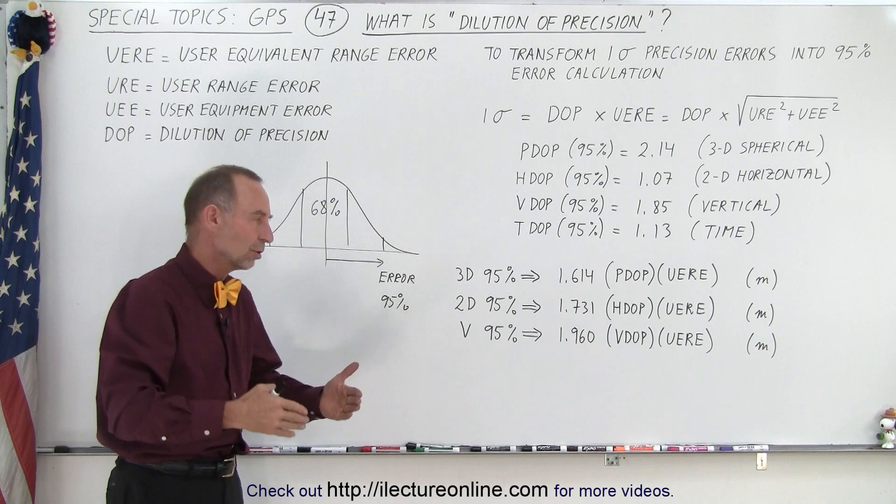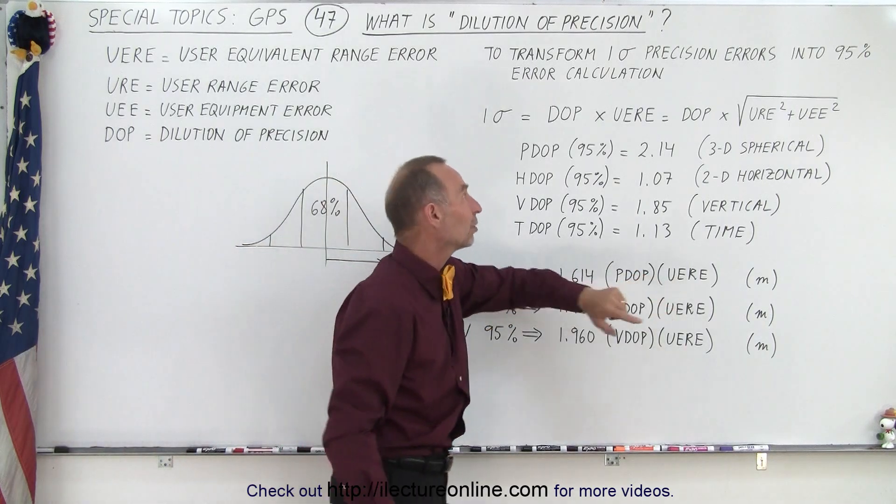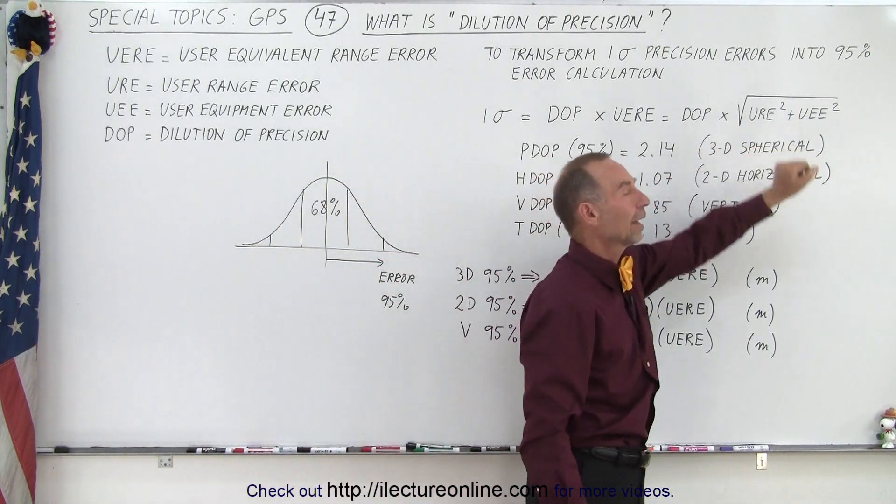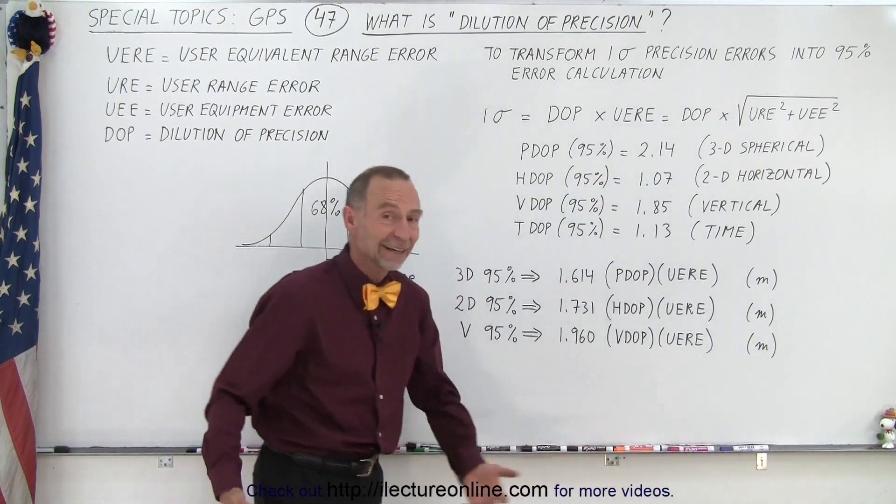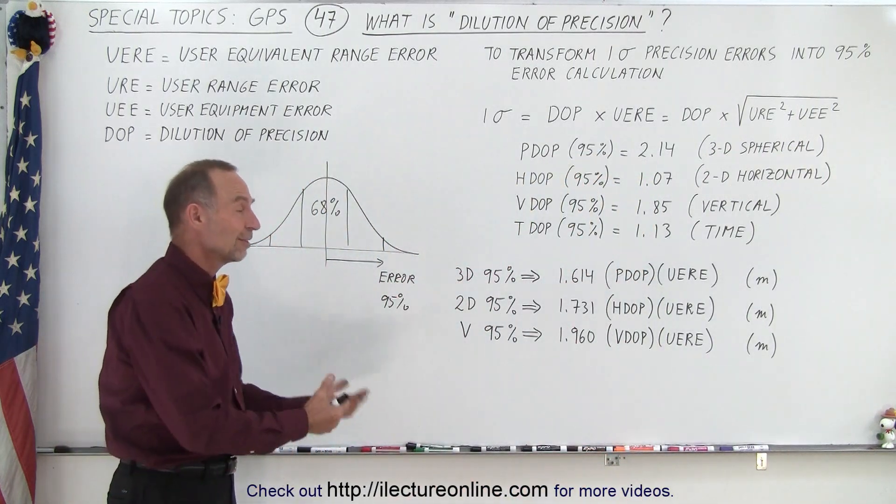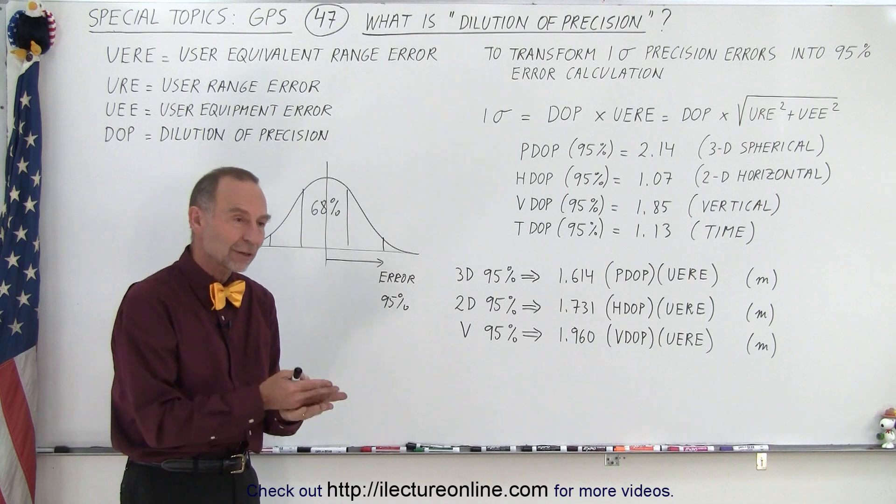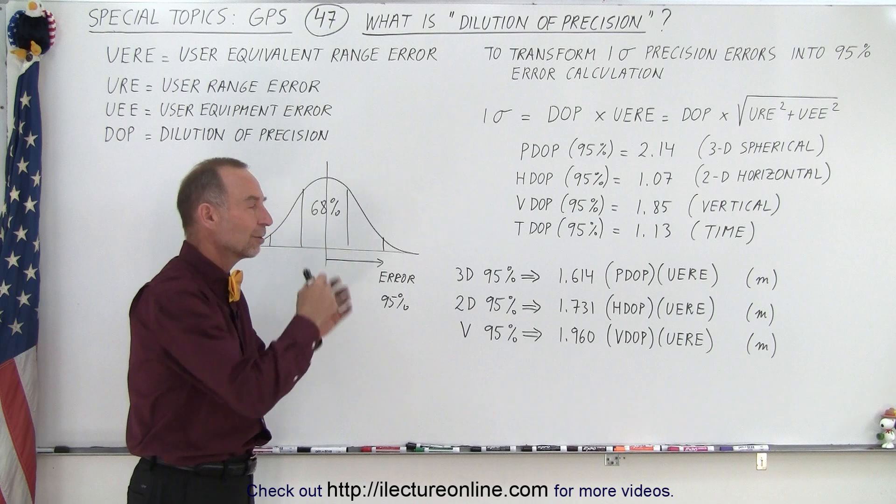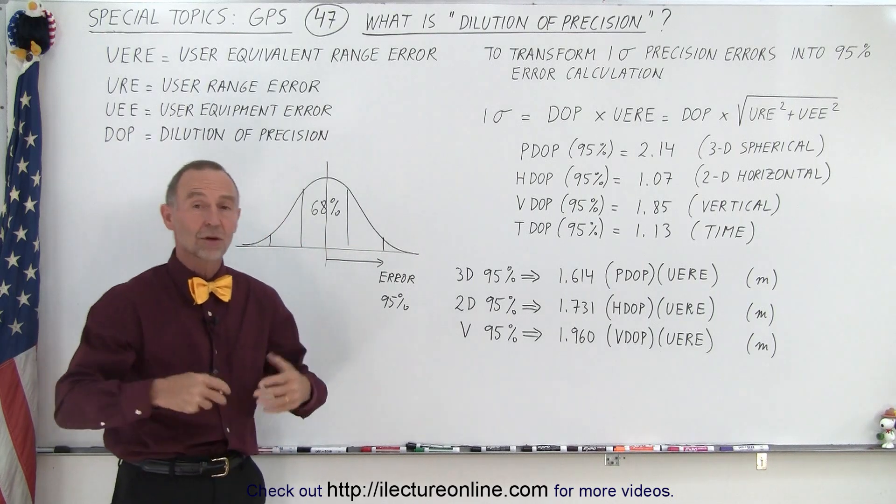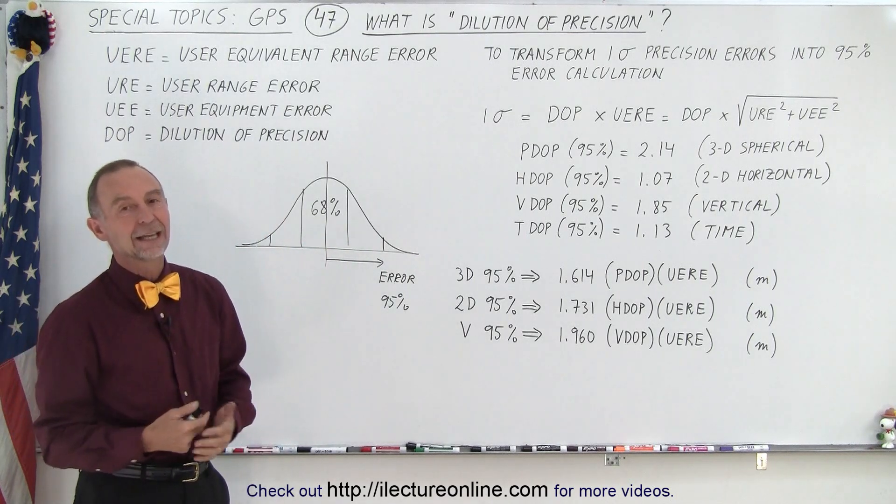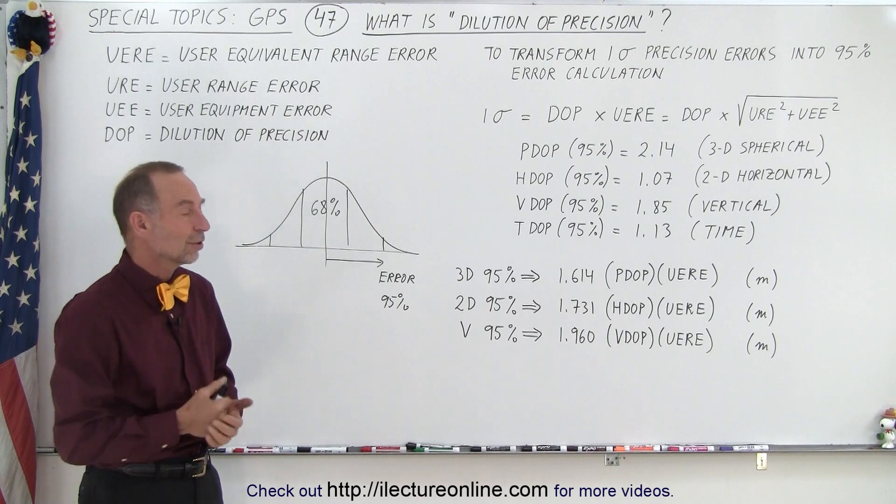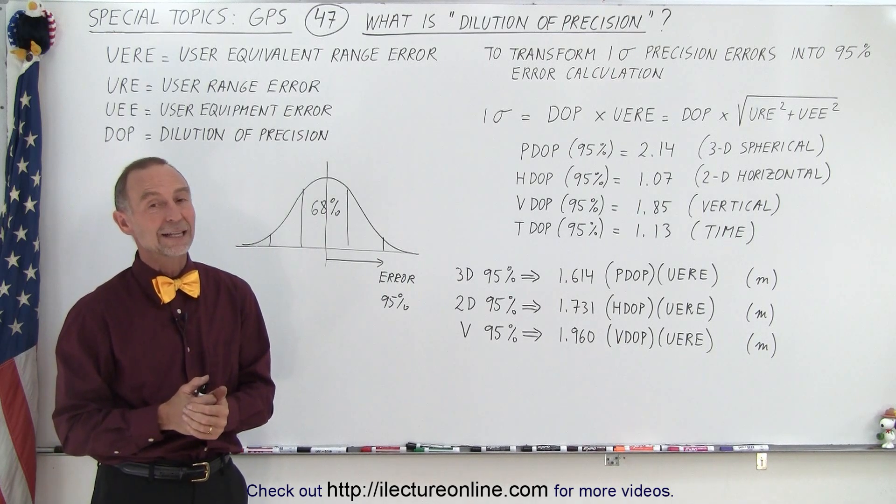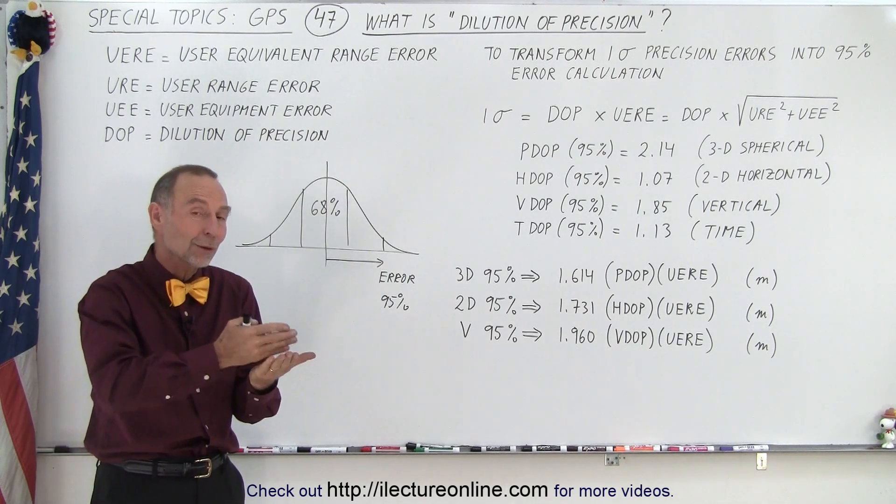So that is how we then estimate what our range errors are going to be in our measurements based upon the URE, which is of course based upon the URE and the UEE. And that is the lengthy process the receiver has to go through in order to figure out how to calculate the best range values we can based upon the atmospheric conditions and all the other errors that will sneak into your calculations, and we try to deal with it the best we can. And notice that it also depends upon what mode you're in,